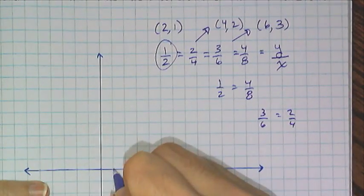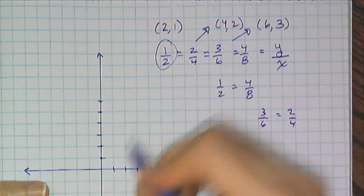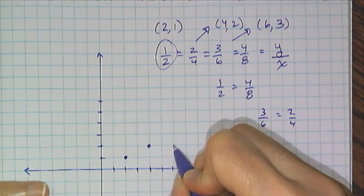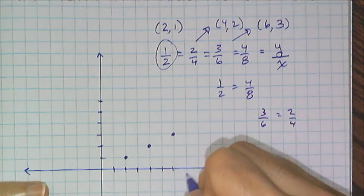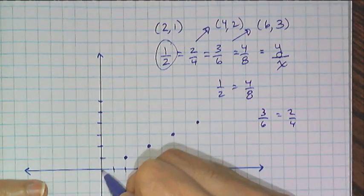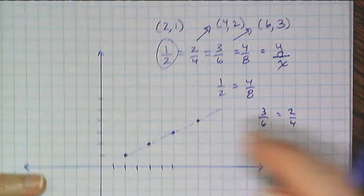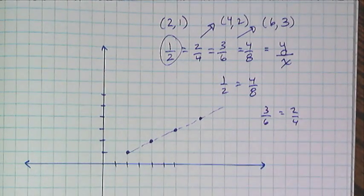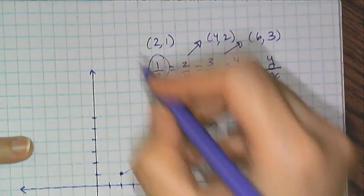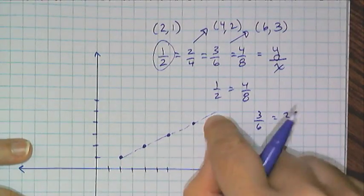I am going to graph the points made up by these ratios. Now I want you to see what happens. Let's have our scale count by 1s on x and y. So the point (2, 1) is right there, (4, 2) is right there, (6, 3) is right there, and (4, 8) is going to be right there. Check it out — every single one of these points lines up in a line! So what that means is if you have a proportional relationship and you turn the points into x's and y's, where the denominator is x and the numerator is y, you're going to get a line.